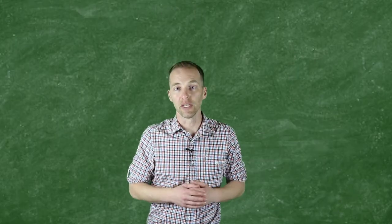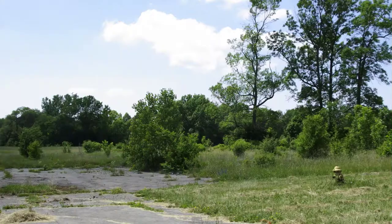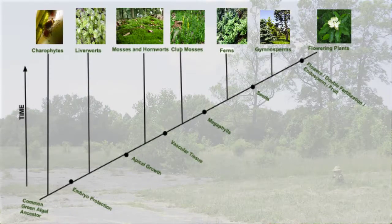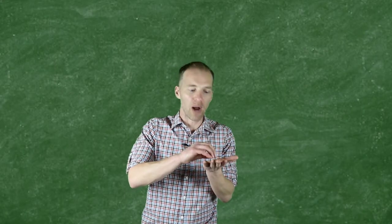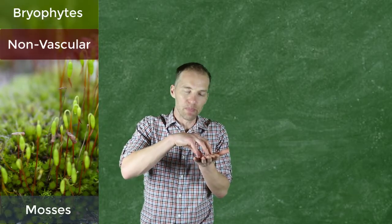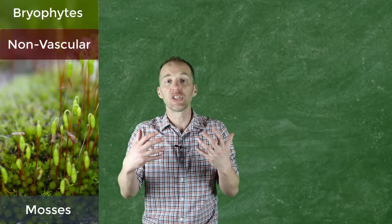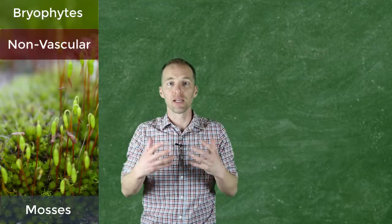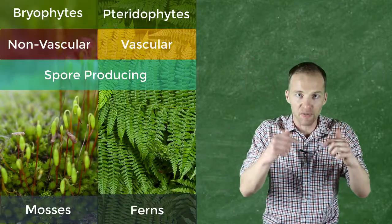My hope is that after watching this video, you can link the process of succession occurring in a parking lot to the increasing complexity we can observe in the different groups of the plant kingdom. In our parking lot, we would first have the bryophytes — the mosses — appearing in tiny cracks and expanding them. As they die, they produce organic matter that could eventually feed more complex plants: our first tracheophytes, our first vascular plants, the pteridophytes — the ferns.